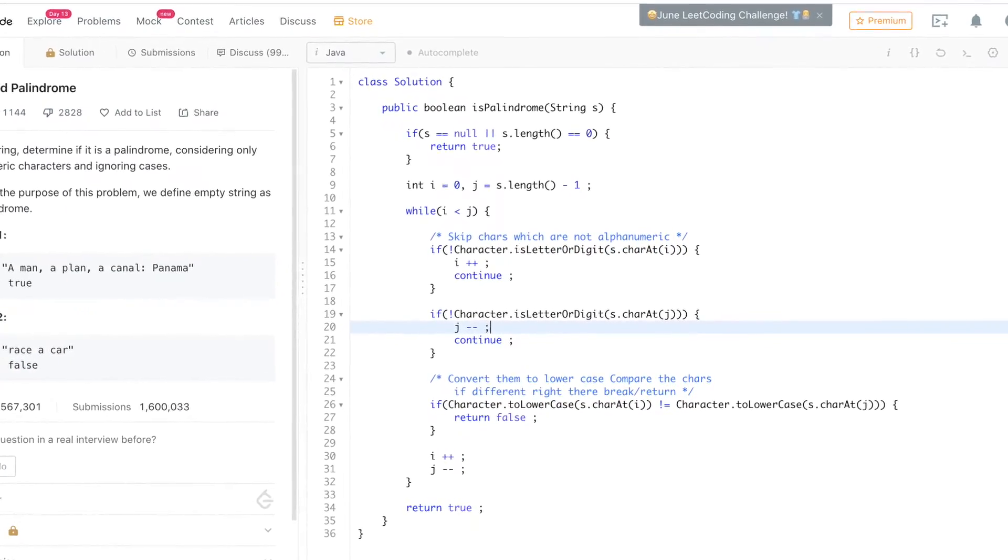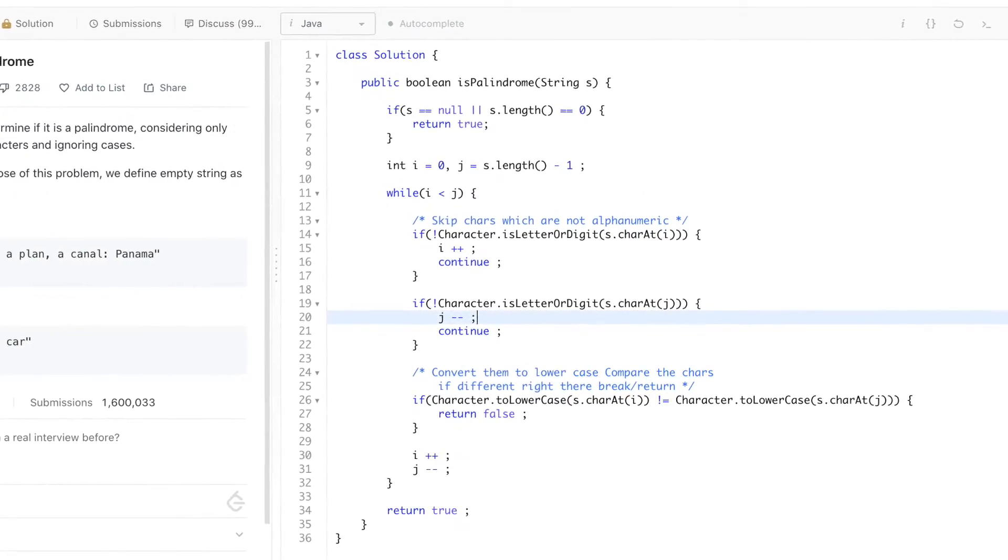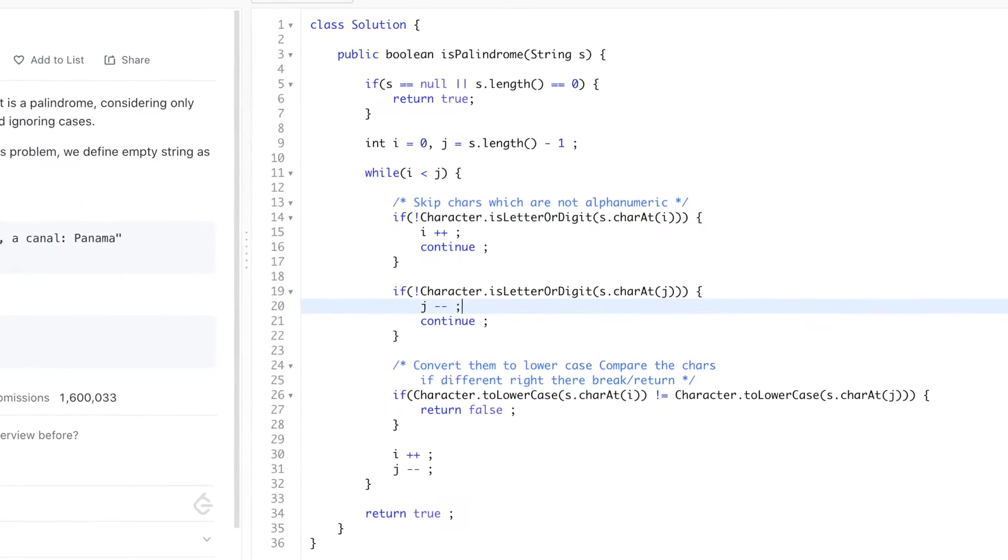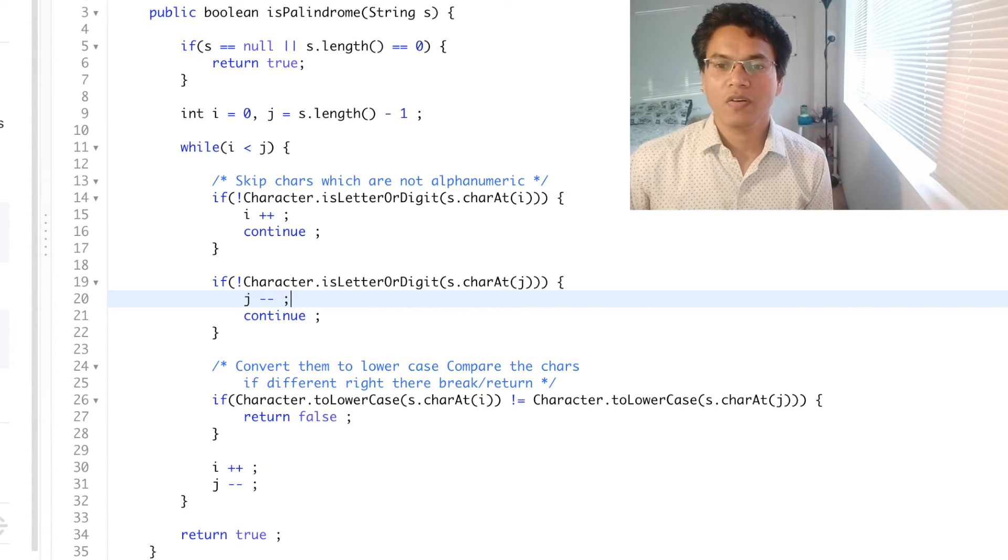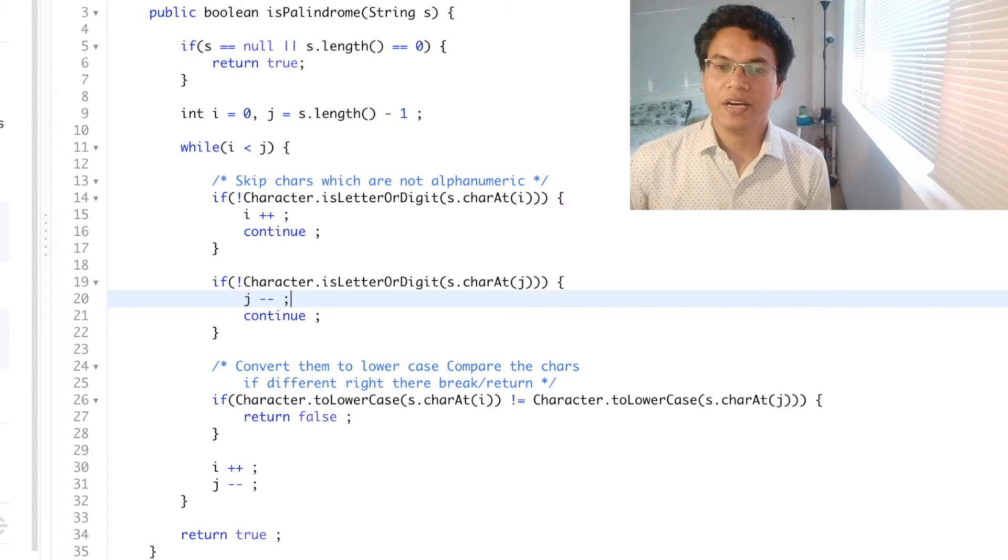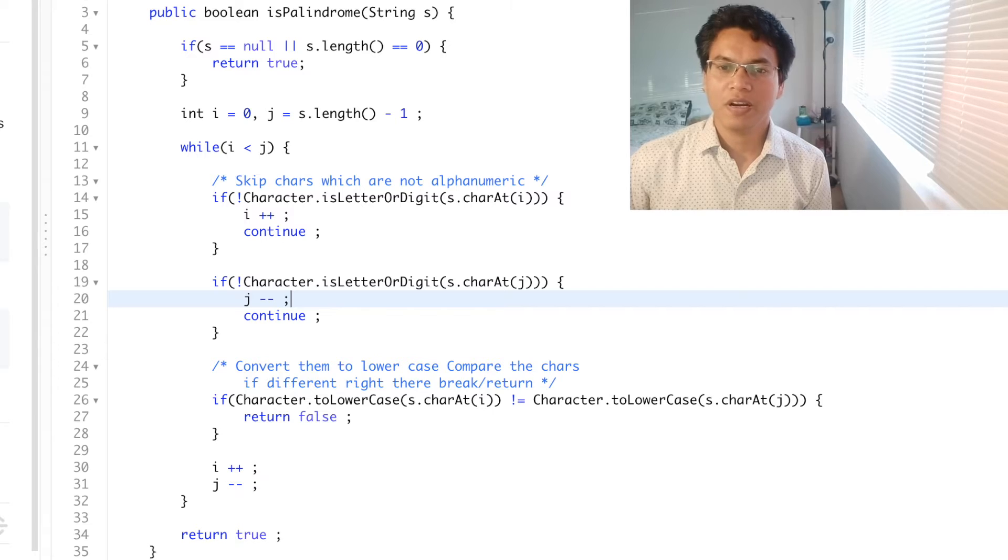I have taken two pointers. i equals 0, j equals length minus 1. And started a while loop. In the while loop, I am checking if the character at i is not a letter or a digit, then increment i. Similarly for j. Check if it is not letter or a digit, then decrement j and continue.